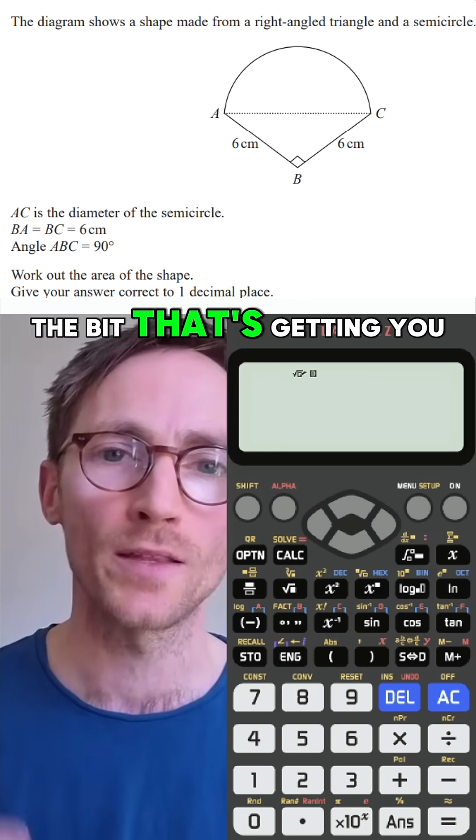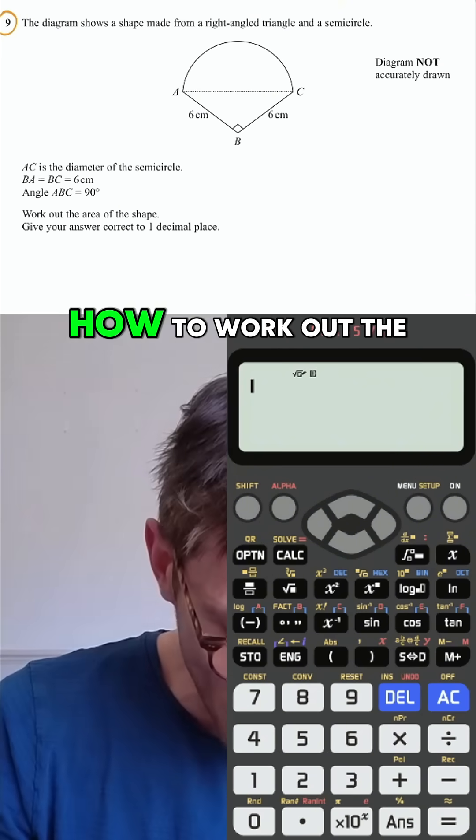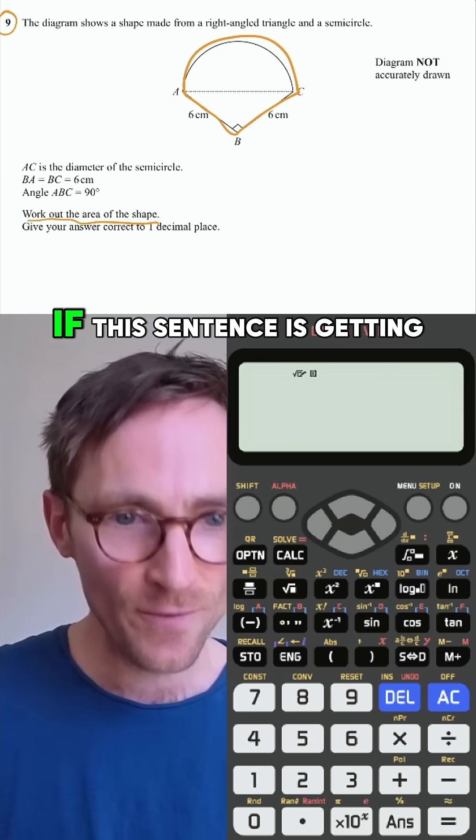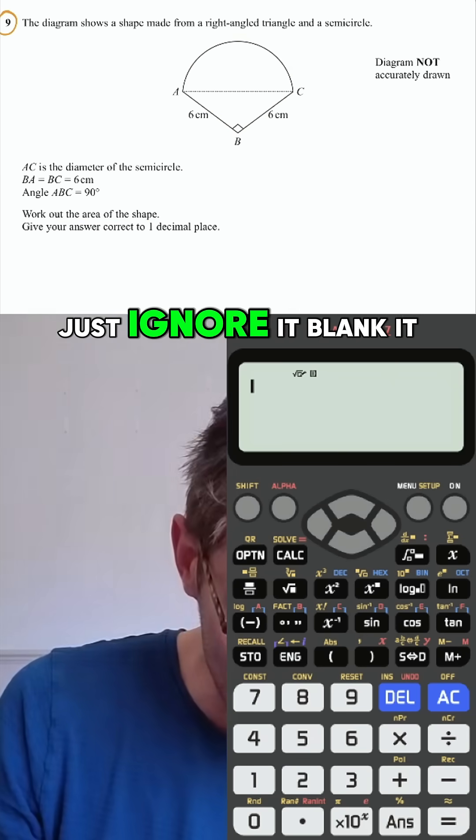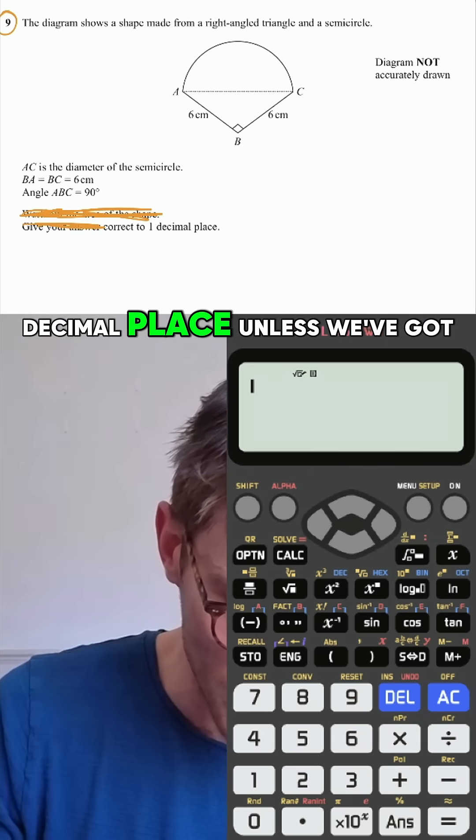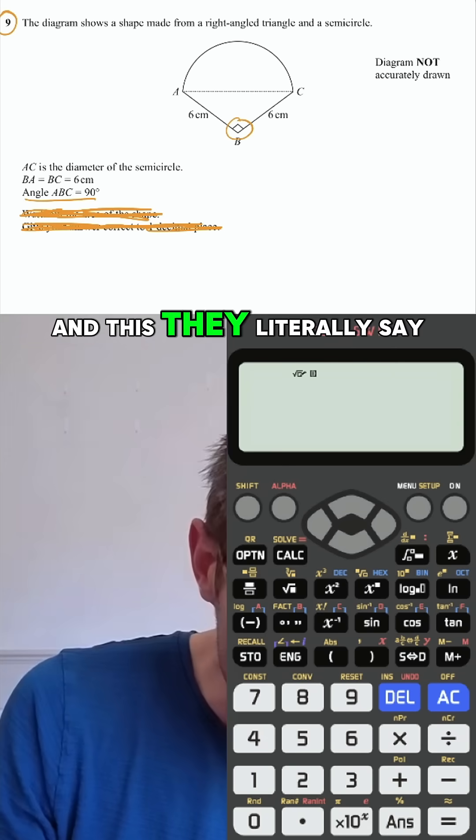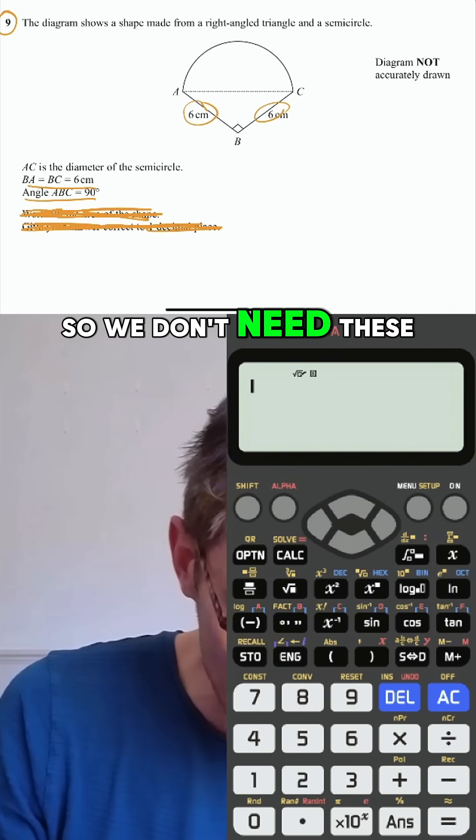The first step is ignore the bit that's getting you stuck. So if you don't know how to work out the area of this shape, if you'll think, oh god, I didn't learn this shape. If this sentence is getting you stuck, just ignore it. Blank it out. There's no point in one decimal place unless we've got the answer, so blank that out.